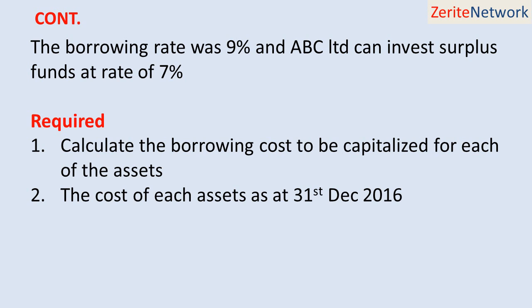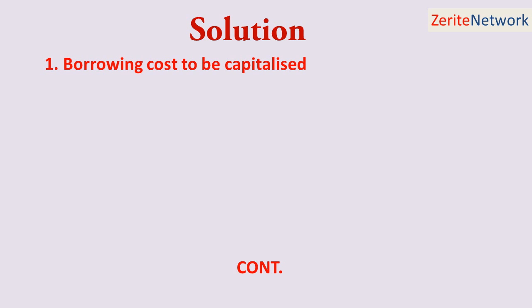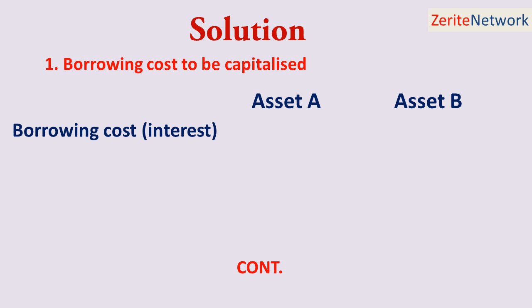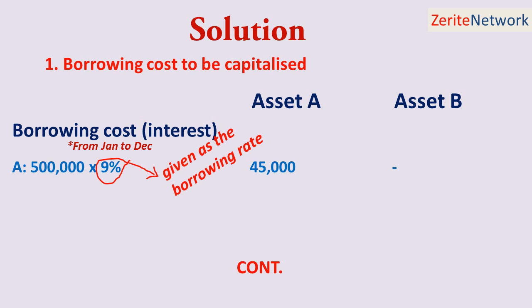Here is the solution. Borrowing costs can be capitalized as follows — we have Asset A and Asset B. For borrowing cost, there is the interest from January to December. For Asset A, it's $500,000 times 9% — the 9% is given as the borrowing rate — and that gives us $45,000. And for Asset B, it's $1,000,000 times 9%, which gives us $90,000.